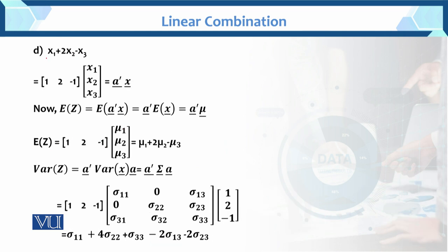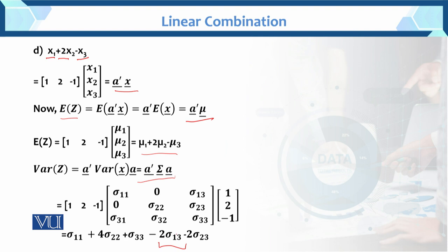Now part d: z = x1 + 2x2 - x3. Following the same pattern, a = [1, 2, -1]. The expected value E[z] = a-transpose mu, and the variance Var[z] = a-transpose sigma a. Note that here too, cross terms like sigma13 and sigma23 appear twice each when you expand the multiplication.